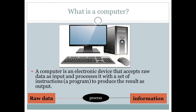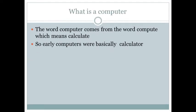My first topic is: what is a computer? A computer is an electronic device that accepts raw data as input, processes the raw data, and gives us information. That is basically what a computer is all about. The word 'computer' came from the word 'compute,' which means calculate. So earlier, computers were basically calculators.